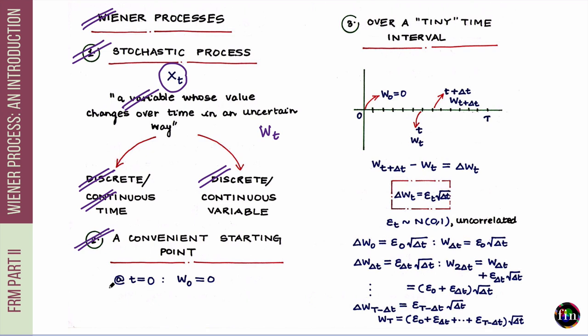Let's start with a convenient starting point. I'll assume that at time t equal to zero, my W starts at a value of zero. This means that whichever path I simulate for W, all these paths have a common starting point of zero at time t equals zero. Now let's write down the logic that W will follow when it comes to changes over a very tiny time interval. W is a continuous variable in continuous time.